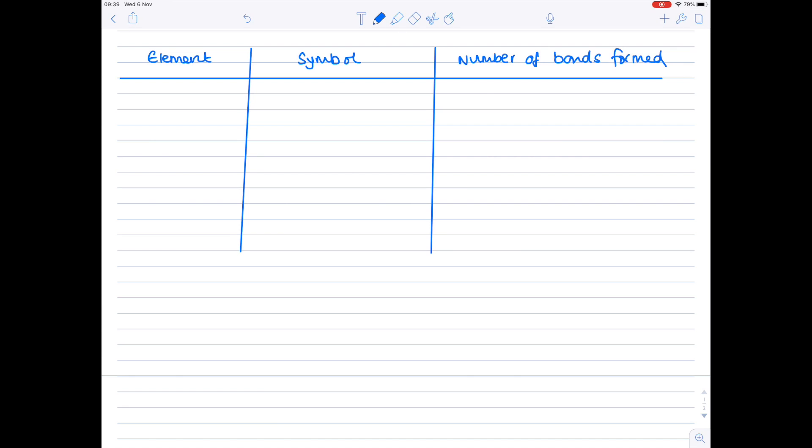Moving on now, we need to consider how many bonds each element forms. This is super important because it will help us draw out our molecules properly.